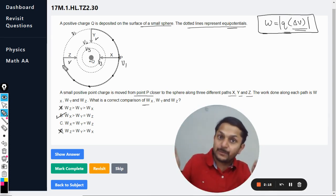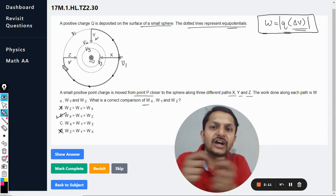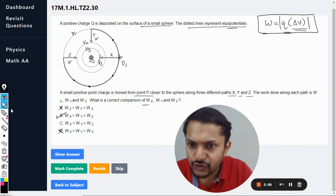But in the case of X, the potential difference is bigger, and hence more work will be done to take the charge to a bigger potential difference. And that is why the answer should be B.